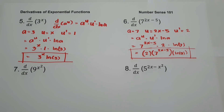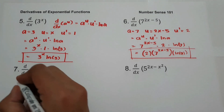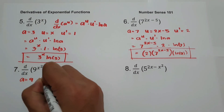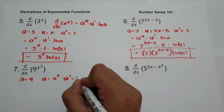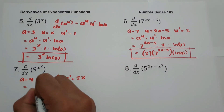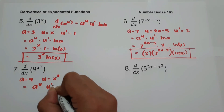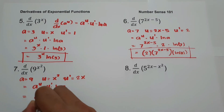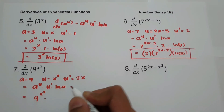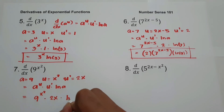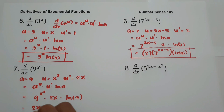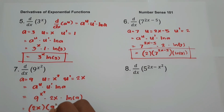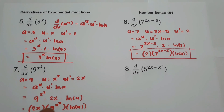On number 7, what is the derivative of 9 raised to x squared? Let a equal 9, u equal x squared, and u prime equal the derivative of x squared, which is 2x. Applying the formula: 9 raised to x squared times u prime, that is 2x, times ln 9. Our final answer is 2x times 9 raised to x squared times ln 9.